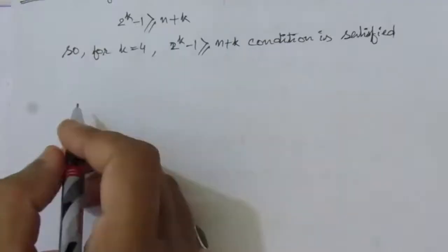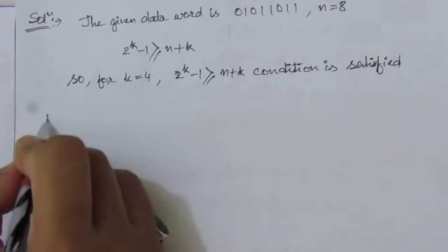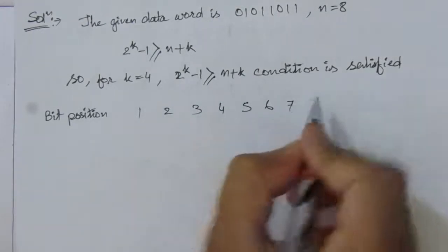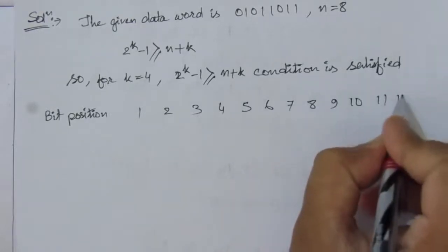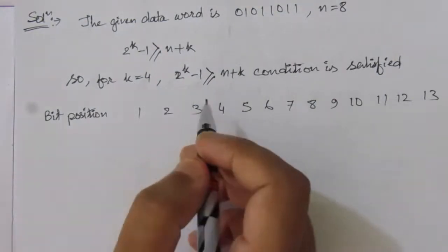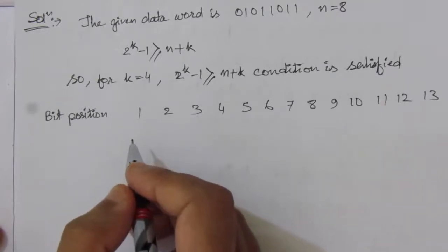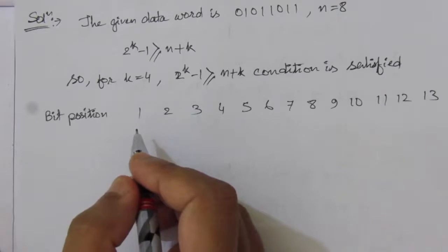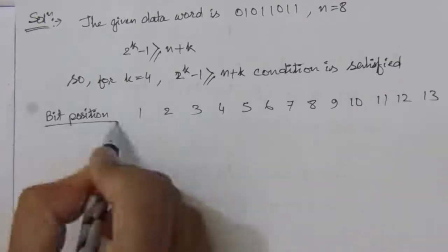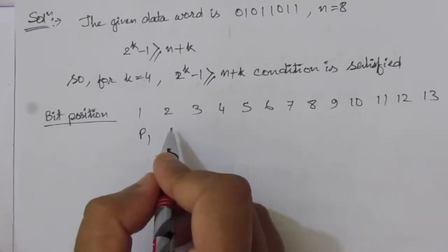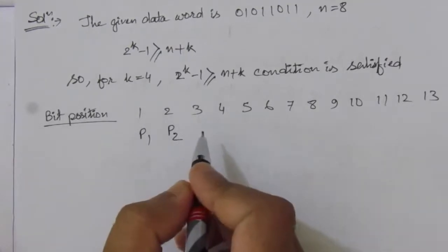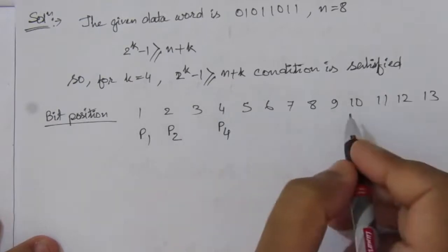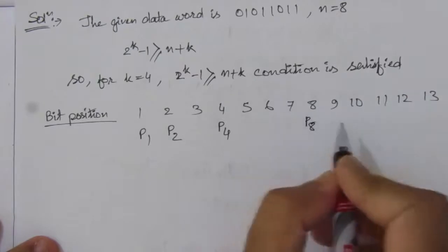For this 8-bit data word we need four parity bits. Let us write down the bit positions 1 through 13. With k equals 4, the four parity bits are placed at positions that are powers of 2: position 1 (2^0), position 2 (2^1), position 4 (2^2), and position 8 (2^3). So p1 goes to position 1, p2 to position 2, p4 to position 4, and p8 to position 8.